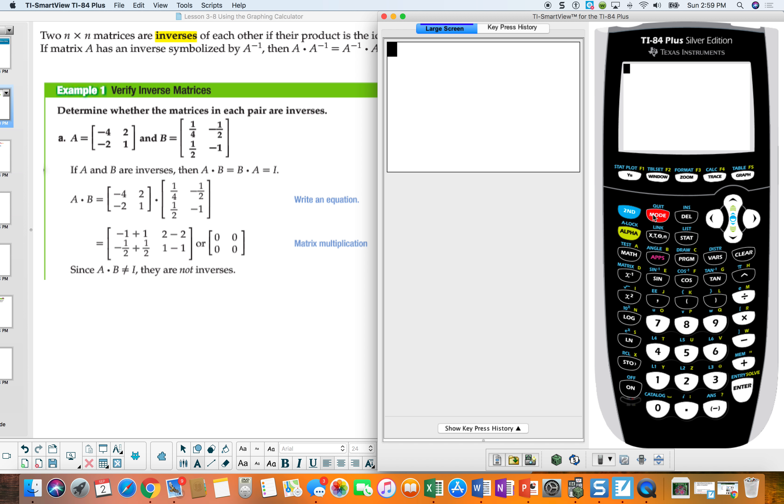So I've loaded up my matrix, second quit. And I'm going to do matrix A, which is 1, and then second matrix. And then I'm going to times it by 2, which is a B matrix. And then this is the answer we got, which tells us these are not inverses.